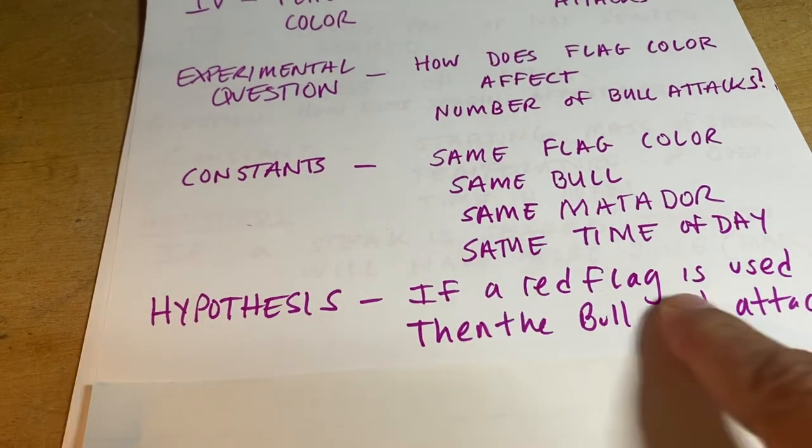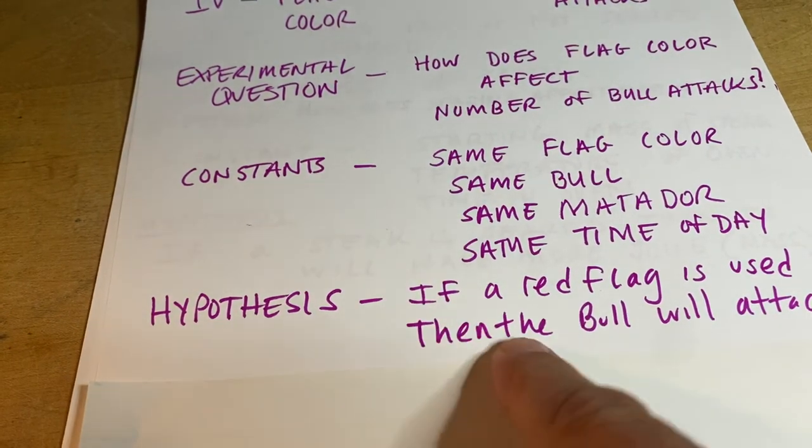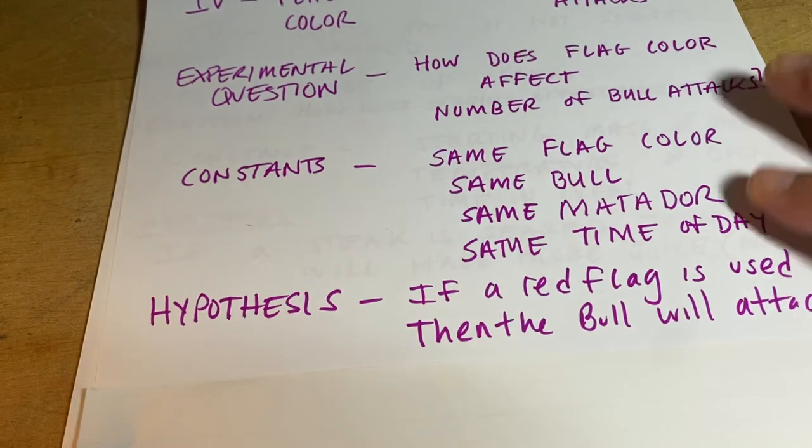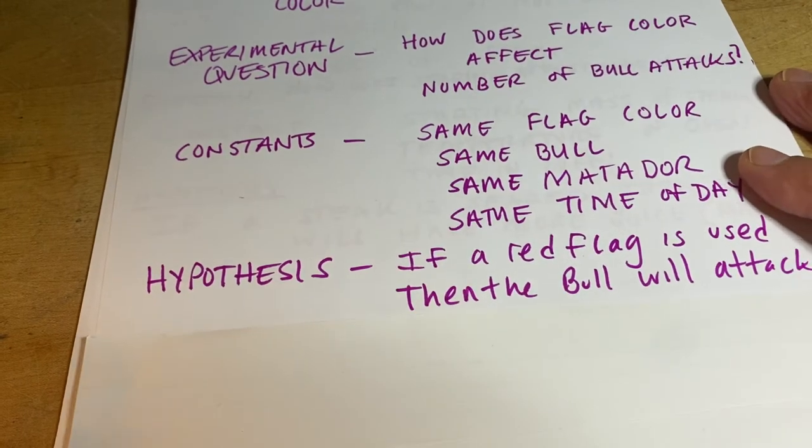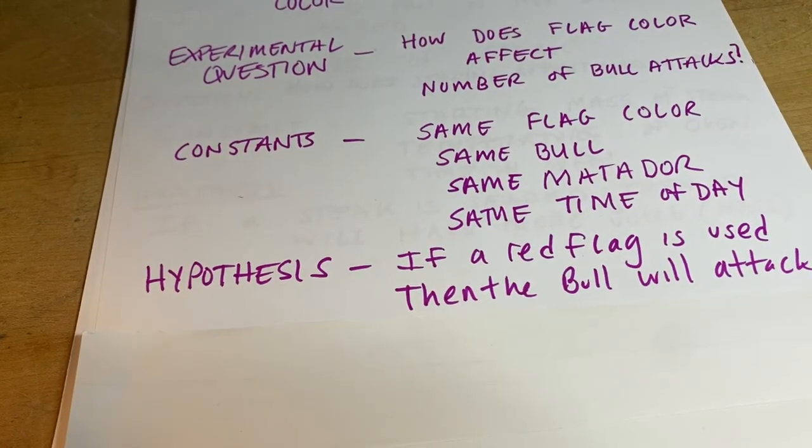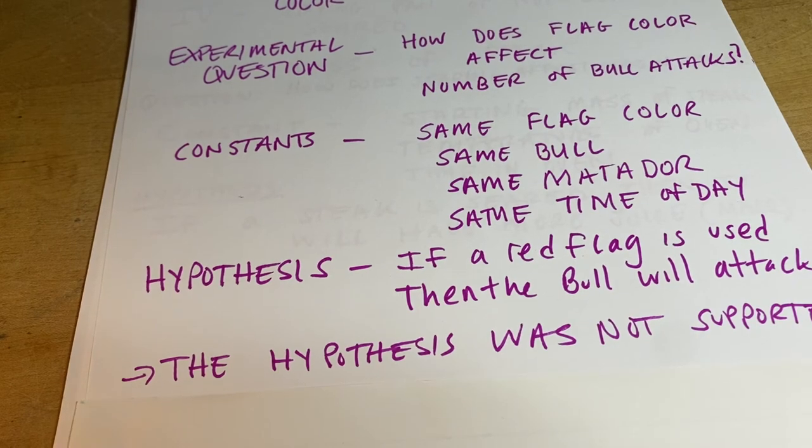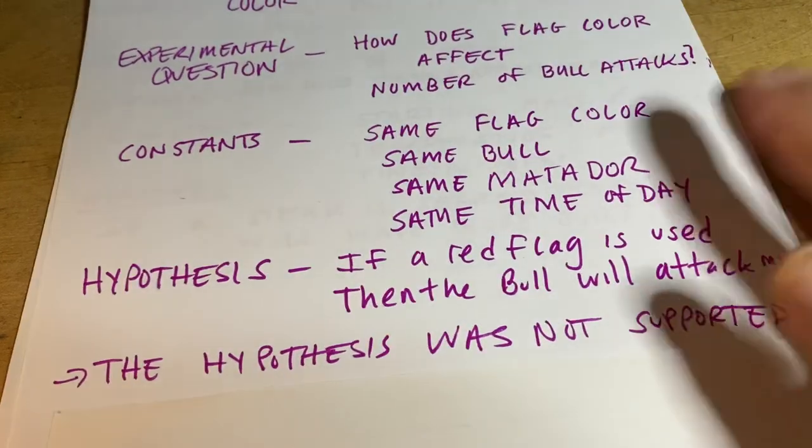If the red flag is used, then the bull will attack more. So if the IV, then the DV. And that's the common hypothesis format. And in this case, the hypothesis was not supported.